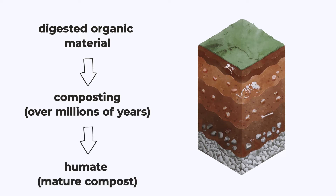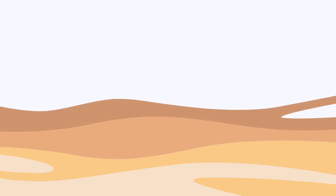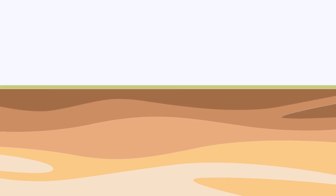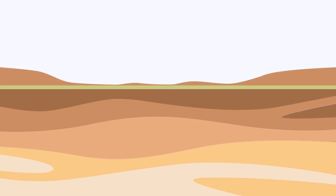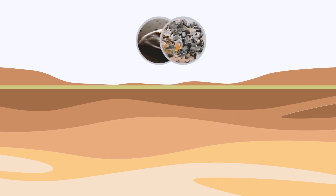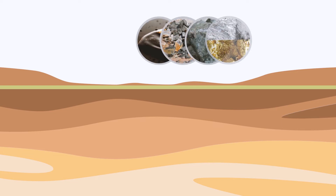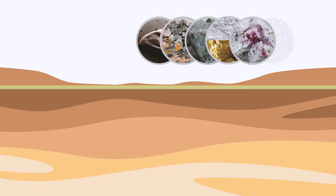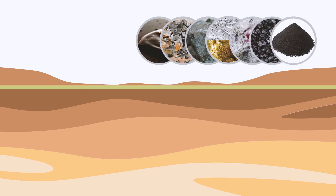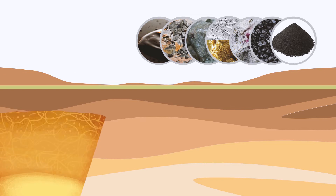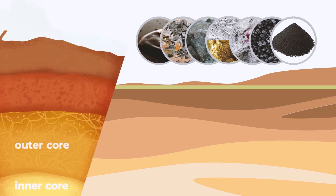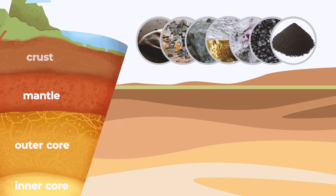A humate is the final stage of mature compost. Time and weather are the greatest factors in changing the molecular structure of our soils into Earth's major deposits that we know today, like fossil fuels, metals, and mineral deposits, gold, silver, crystals, and rare gems, coal deposits, and humate deposits.